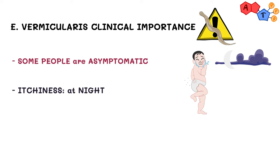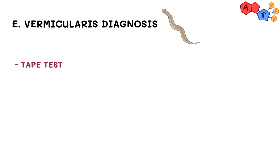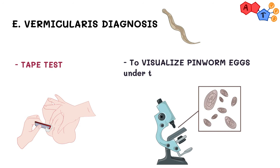It's worth mentioning that children are among the commonly affected age groups with pinworms. For diagnosis, Enterobius vermicularis can be diagnosed using a tape test applied on the perianal area, which helps visualize pinworm eggs under the microscope. Looking at the egg, you can see its sharp edge — the V shape — which you can link to the V in vermicularis.